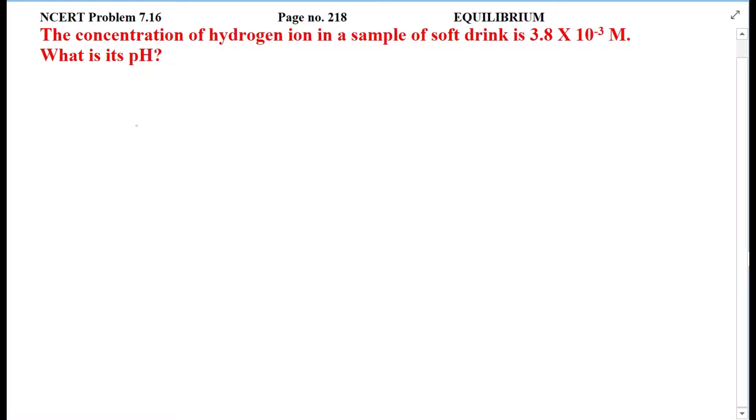The concentration of hydrogen ion in a sample of soft drink is 3.8 × 10^-3 molar. What is its pH?